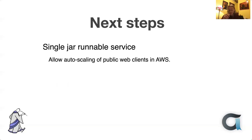The next steps — not this coming release, which I'm hoping to release soon — are to try and package the front-end clients as a single runnable JAR service. Wildfly has a facility allowing you to create a runnable JAR with the whole thing packaged up inside it, which makes it easier to deploy. One of the things I hope to do is use that to allow auto-scaling of the public clients in AWS. It allows for much cheaper deployment because you can run on a very small machine overnight, then just scale up during the day when things get busy. Most front-end services allow you to build in auto-scaling of that kind.